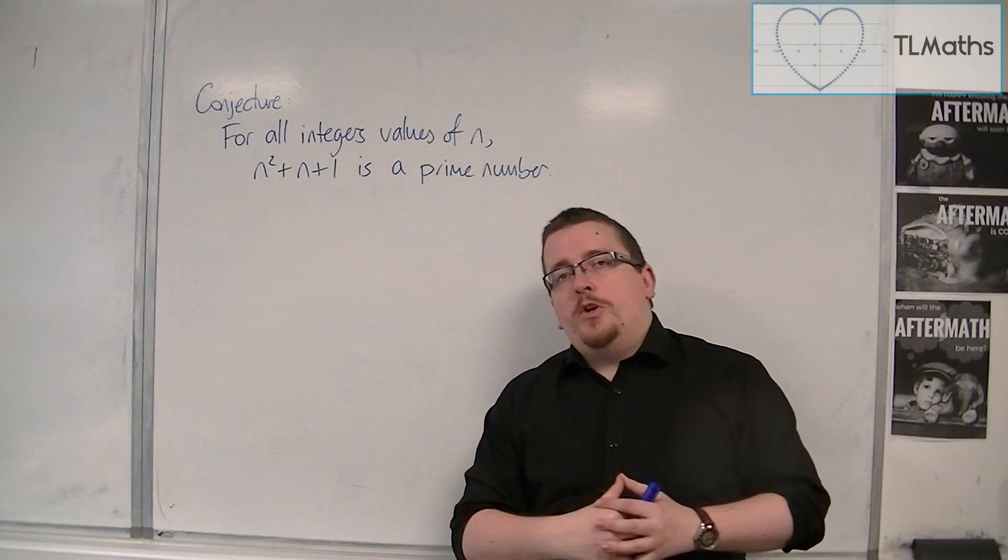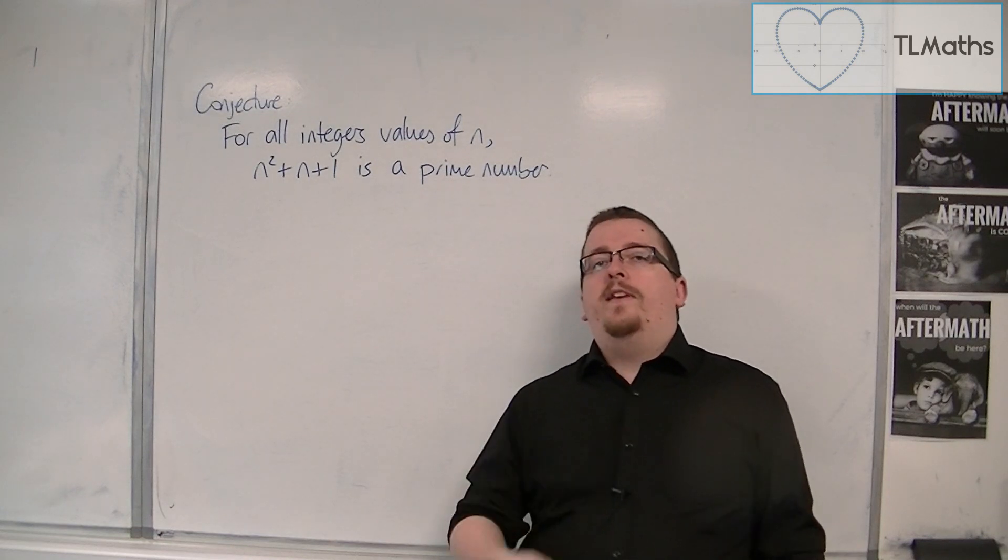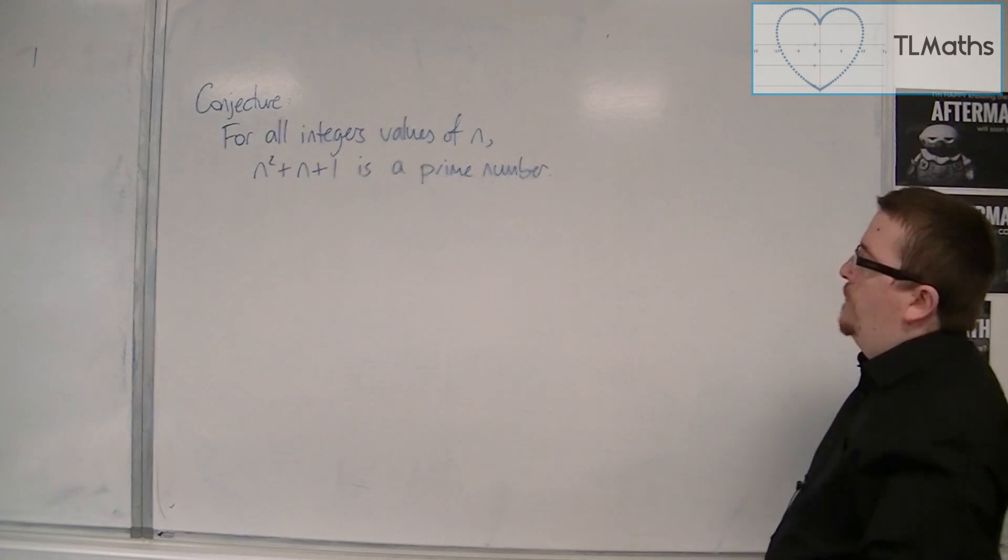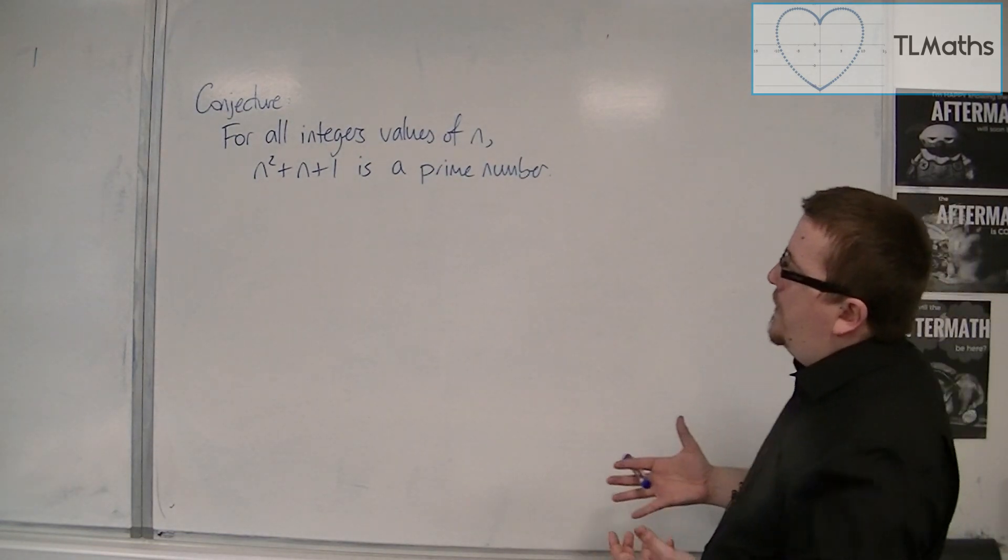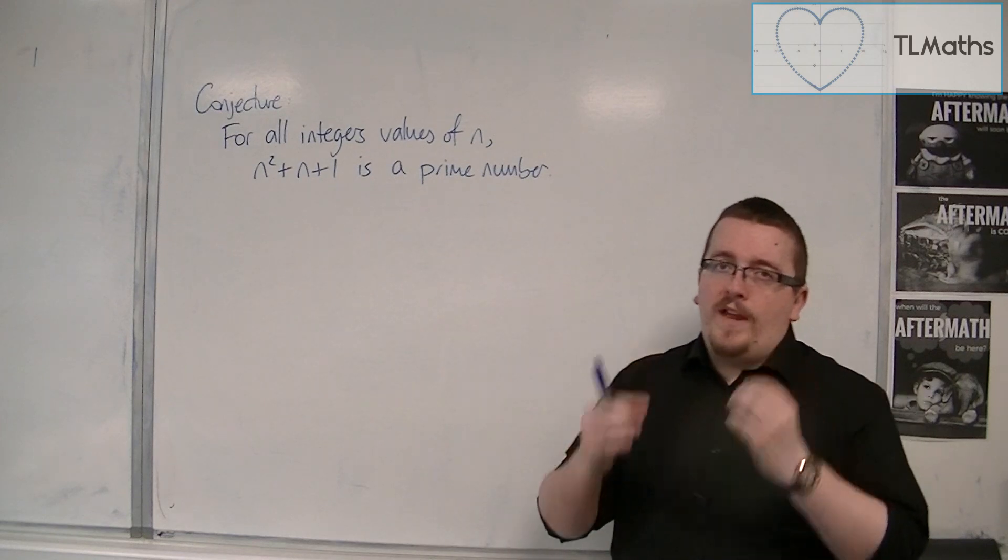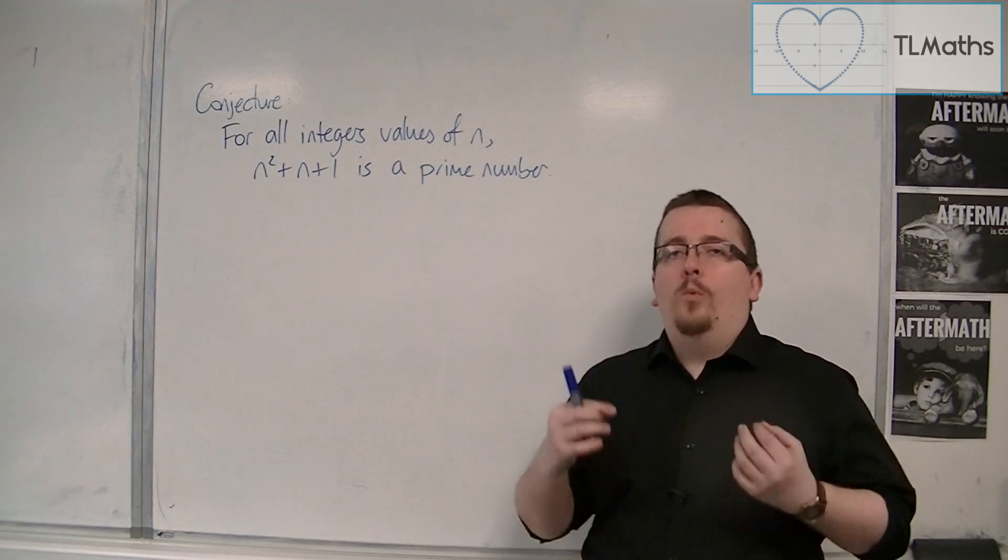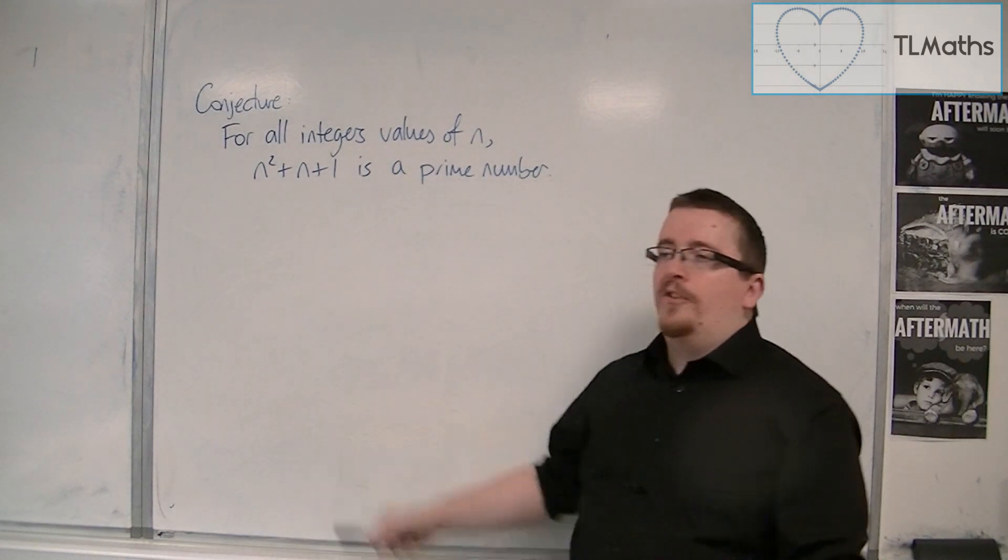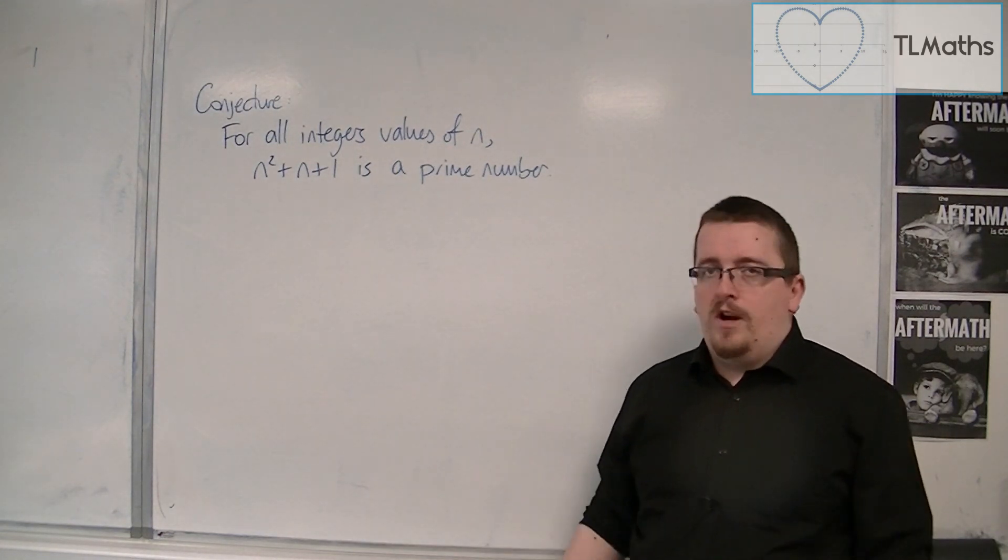And what we're going to do is we're going to prove that this is wrong, that this is false. So ultimately what you need to do is to find a value of n for which it doesn't work. For which when I substitute that value of n into n squared plus n plus 1, I don't get a prime number.